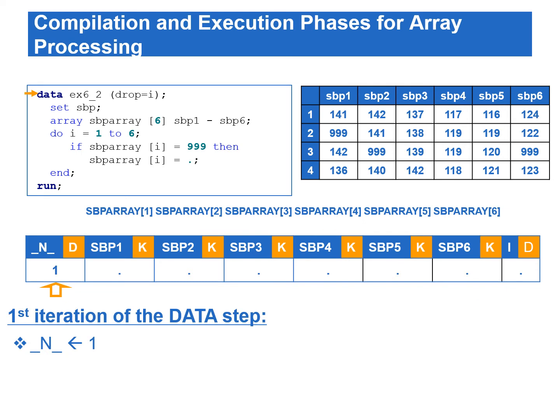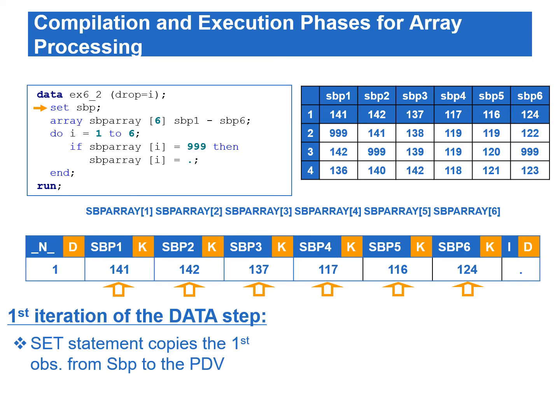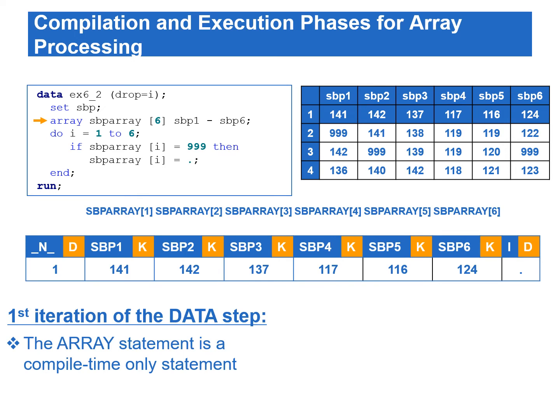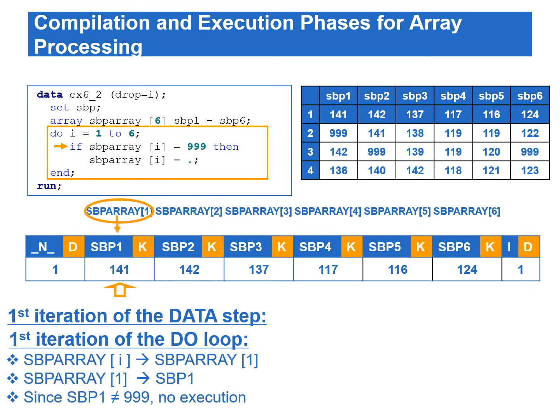At the beginning of the data step execution, _N_ is initialized to 1. The rest of the variables are set to missing. The set statement copies the first observation from the input data to the PDV. The array statement is a declarative statement — it doesn't execute during the execution phase. At the beginning of the do loop, the index variable i is set to 1. In the if-then statement, the array reference SBP_array{i} is the same as SBP_array{1}, which refers to the SBP1 variable. Since SBP1 does not equal 999, there is no execution.